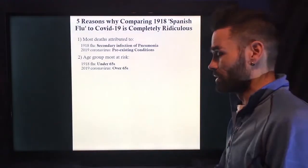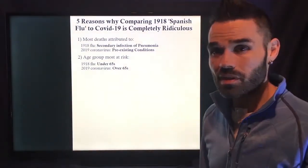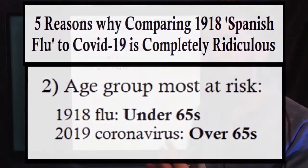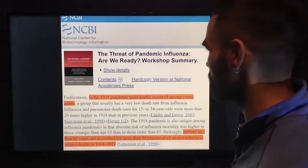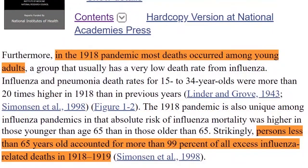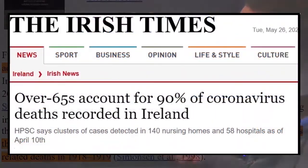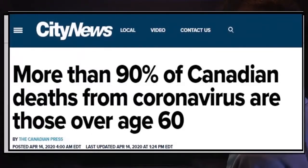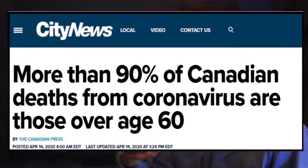The second thing that shows how ridiculous these comparisons are is the age demographics. In the 1918 flu, it was mostly young people under 65 — whereas now it's over 65. Again, polar opposites. As you can see in the study 'The Threat of Pandemic Influenza': in the 1918 pandemic, persons less than 65 years old accounted for more than 99% of all excess influenza-related deaths. Whereas now, over 65s account for 90% of coronavirus deaths in Ireland, and more than 90% are over 60 in Canada.